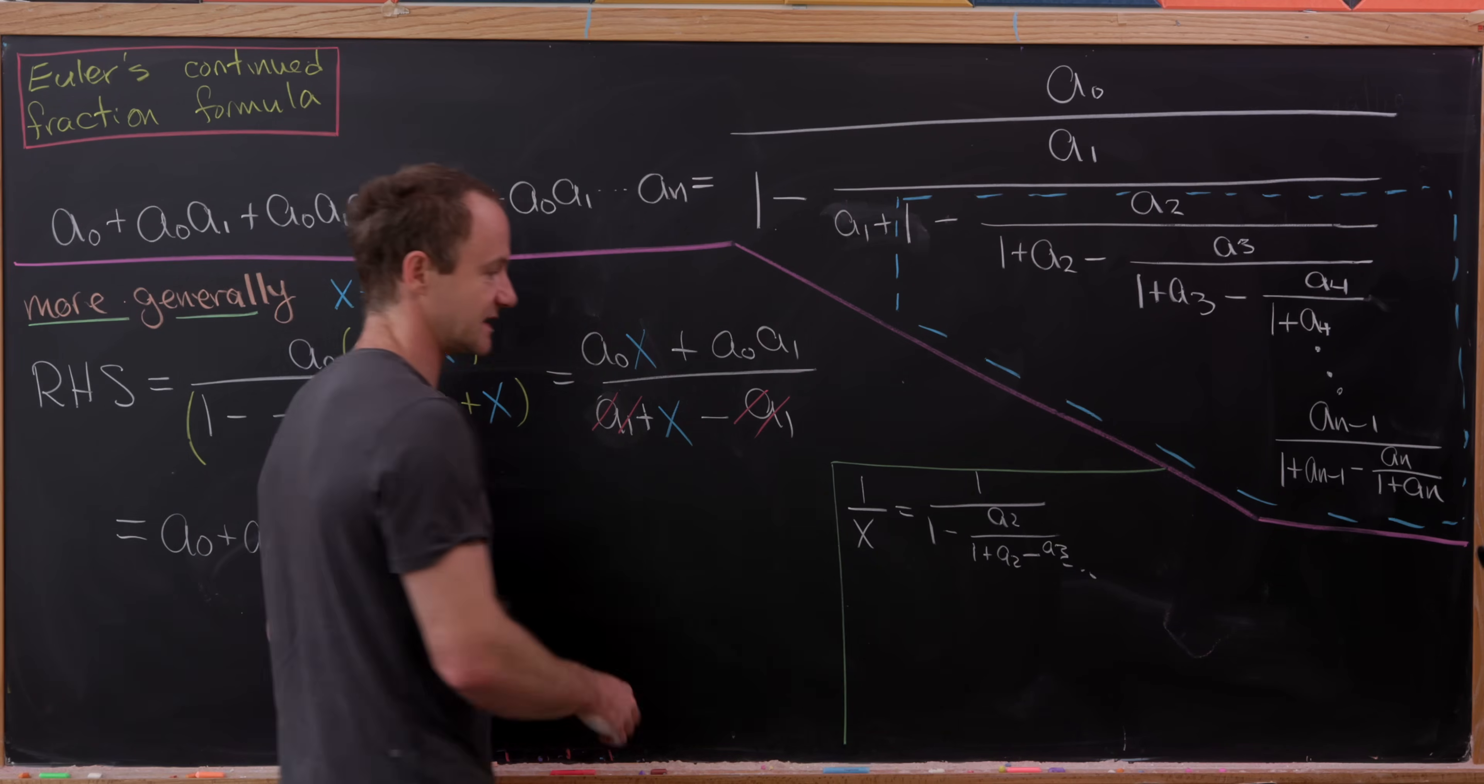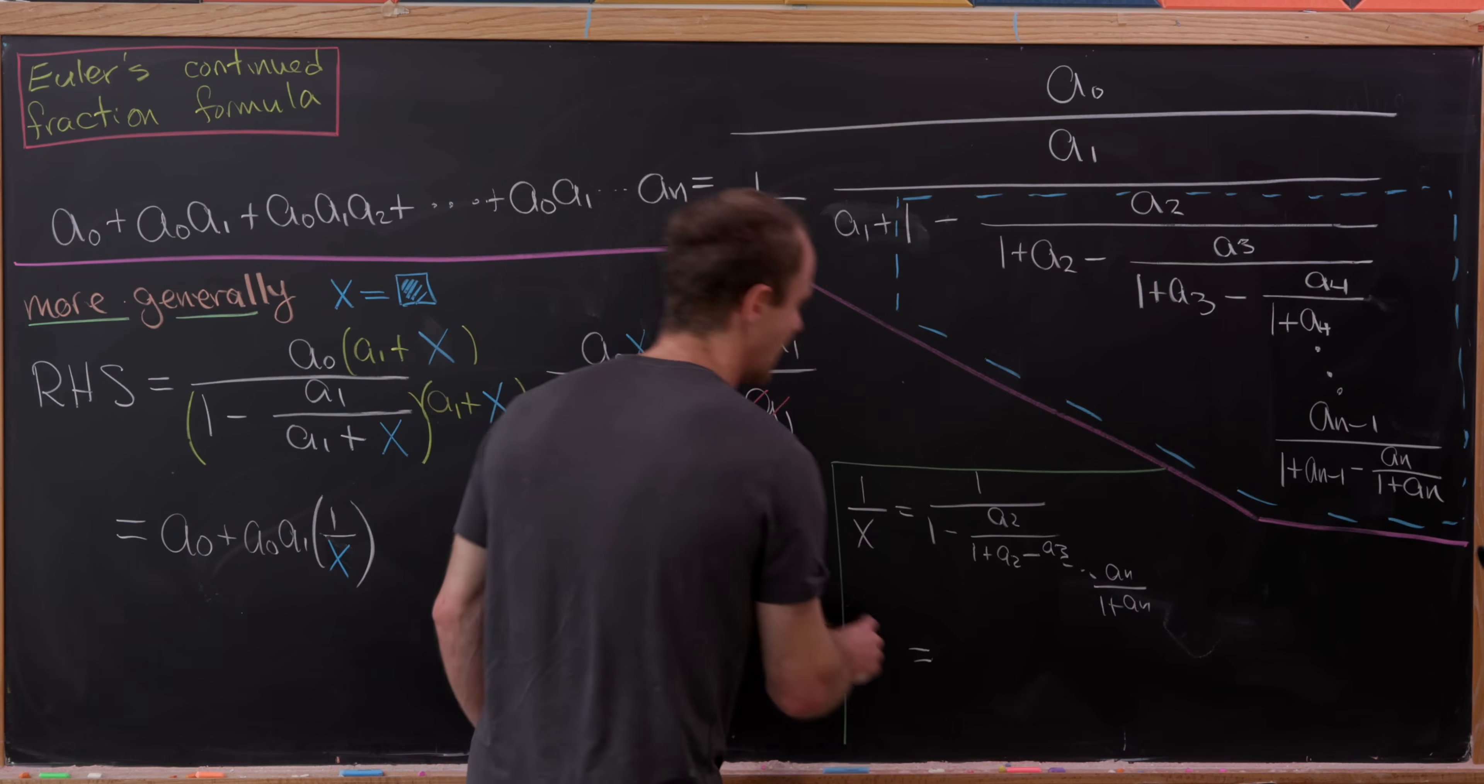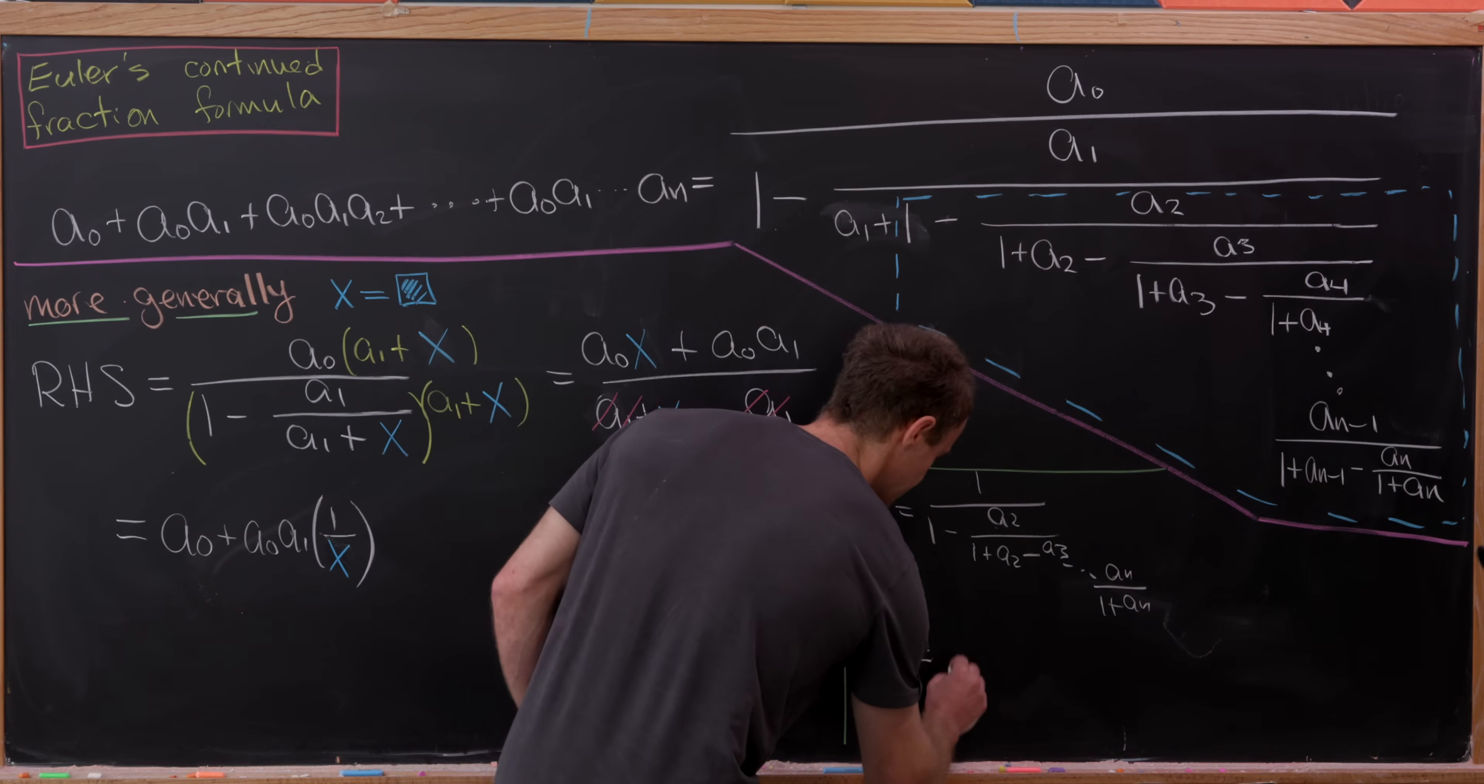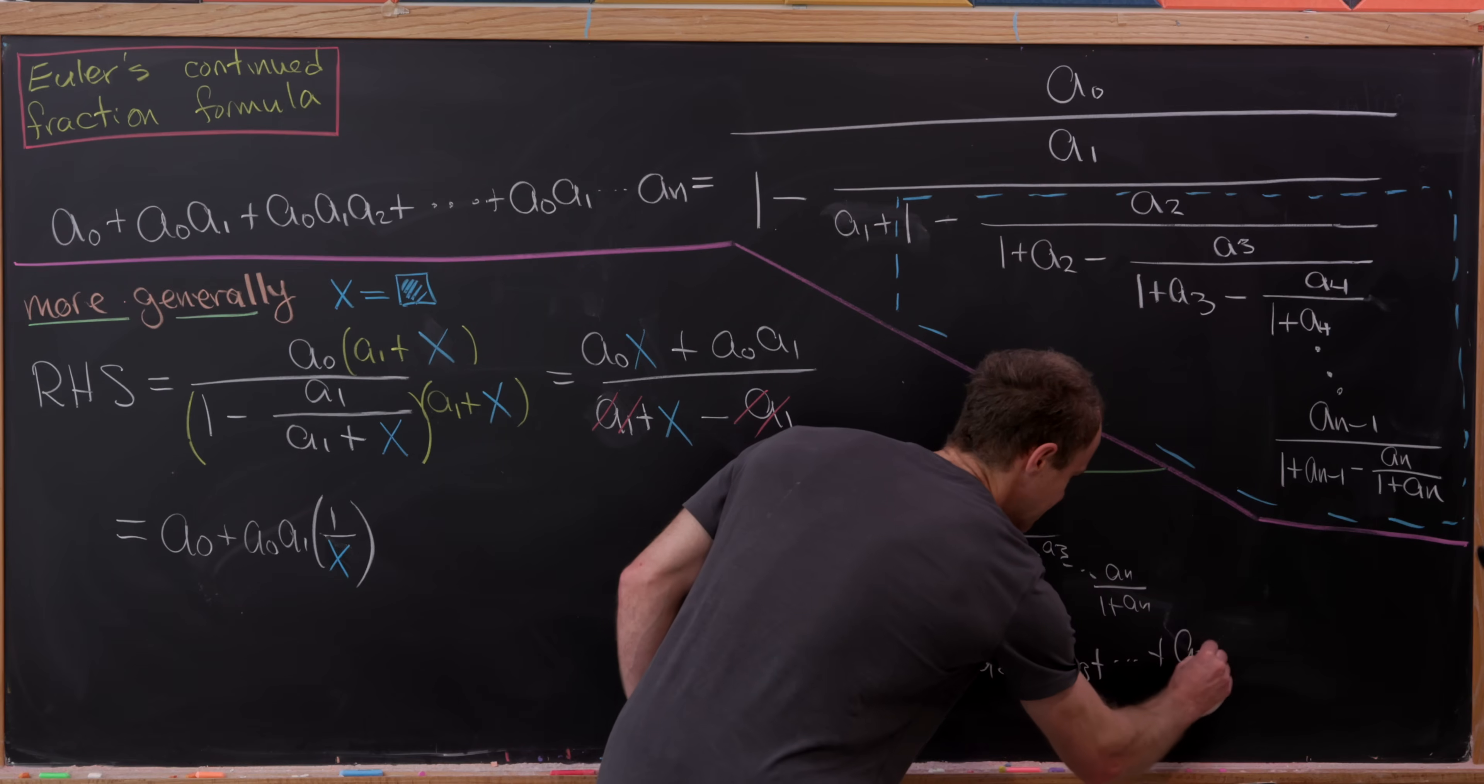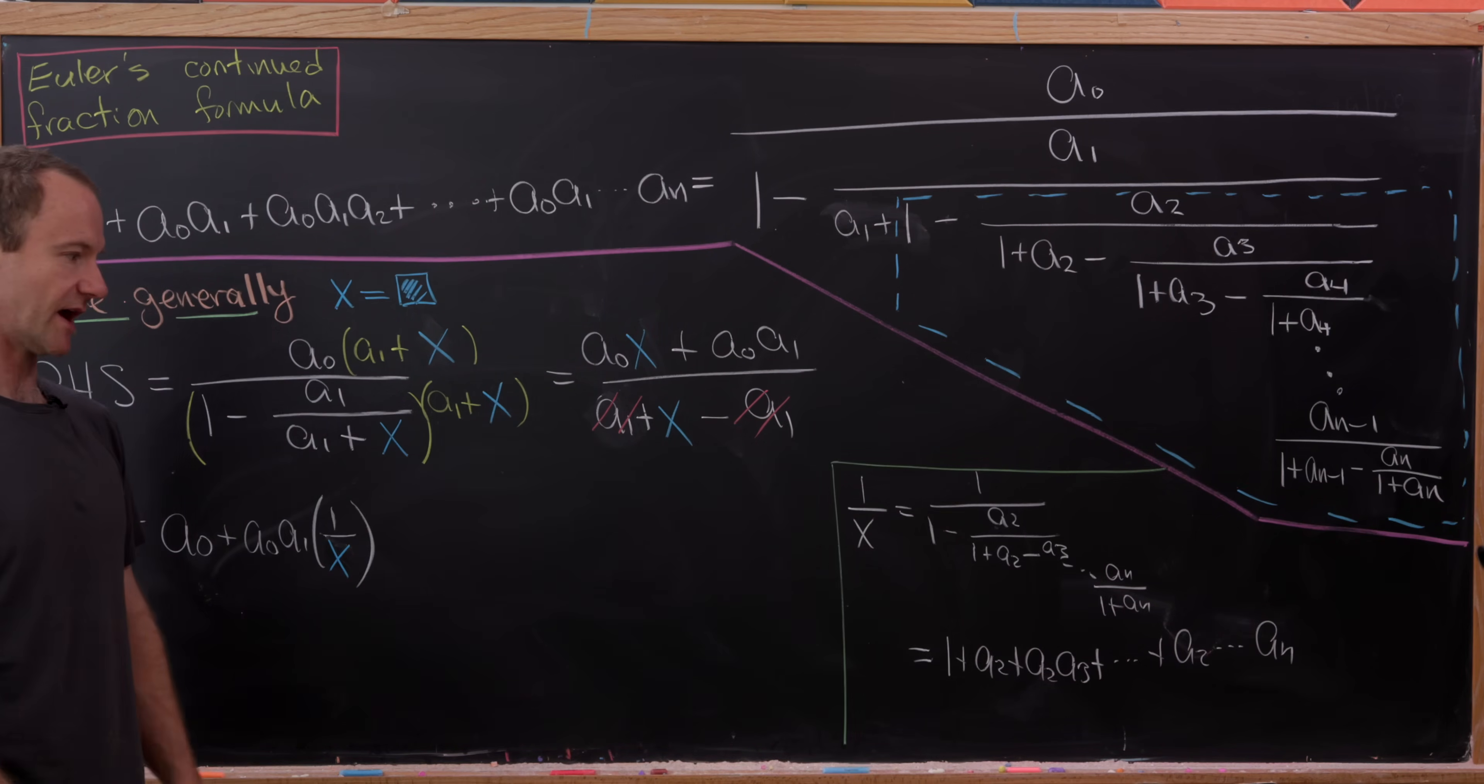And let's apply it to this. So this will end down here at this an over 1 plus an term. And notice it kind of starts with the number 1 and then the next number is a2. So here this looks like 1 plus a2 plus a2 times a3 all the way up to a2 multiplied up to an. So that's 1 over x.